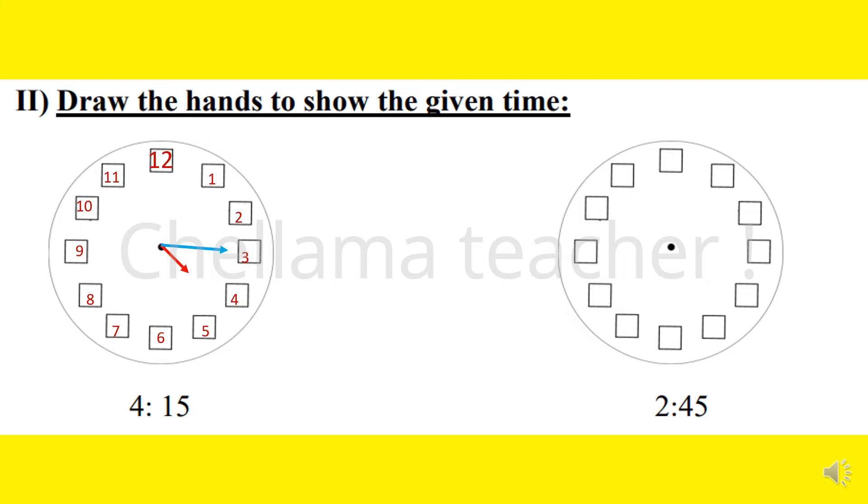In the next clock picture, the time is 2:45. As usual, we have to write the numbers: 12, 1, 2, 3, 4, 5, 6, 7, 8, 9, 10, 11. Now, 2:45 means the hour hand should be between 2 and 3, but it should be near 3, because 45 is closer to the next hour. And the minute hand should point to 9. So now the time is 2:45.